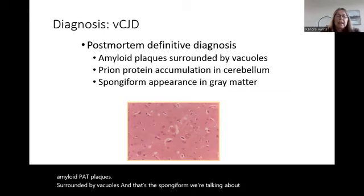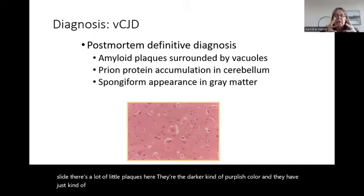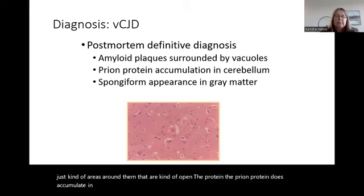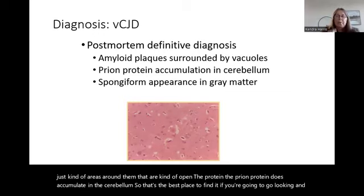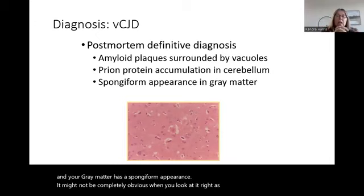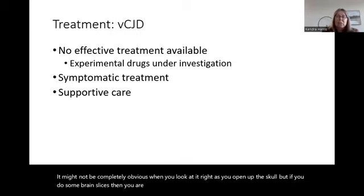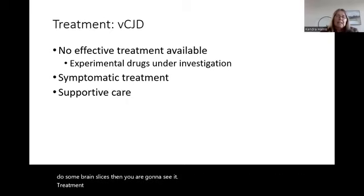Definitive diagnosis is post-mortem: amyloid plaques surrounded by vacuoles, producing the spongiform appearance. In the slide you can see darker purplish plaques with open areas around them. The prion protein accumulates most in the cerebellum, so that's the best place to look. The gray matter has a spongiform appearance that may not be obvious when you open the skull, but brain slices will reveal it.